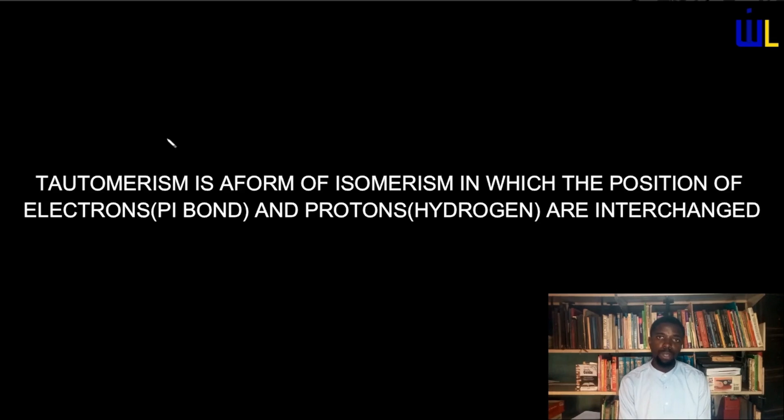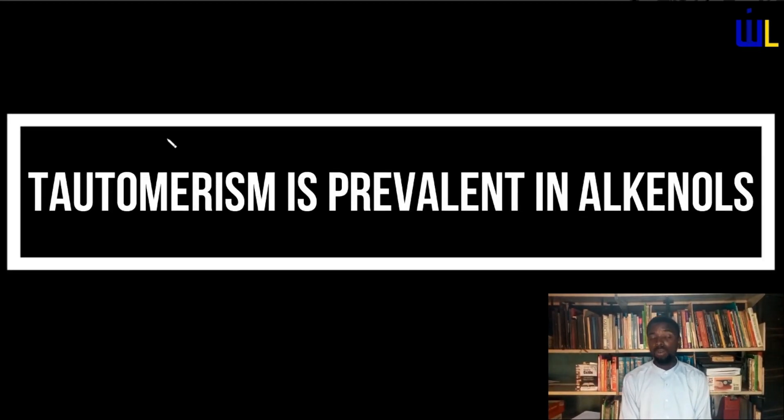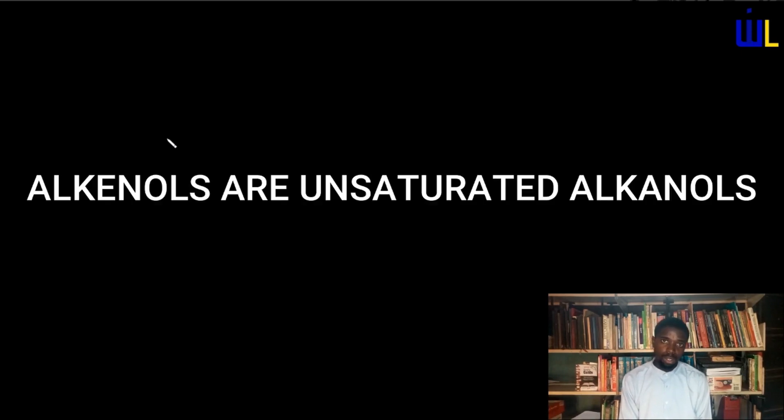We are done with metamerism and now move to tautomerism. Tautomerism is a form of isomerism in which the position of protons and electrons change in the chain. A proton refers to a hydrogen atom, and the electron refers to a multiple bond. When more than one bond exists and the position of one bond changes along with a hydrogen atom simultaneously, that is tautomerism.